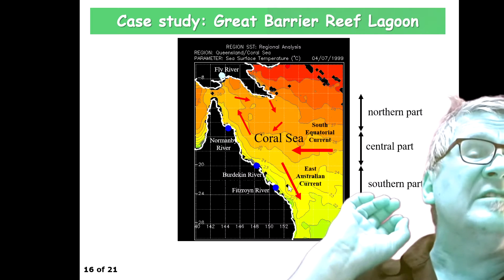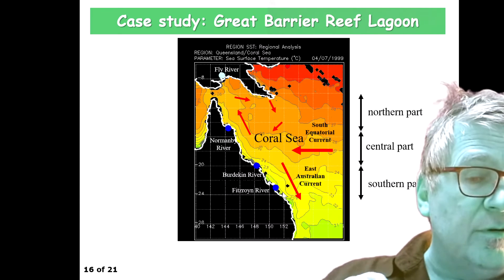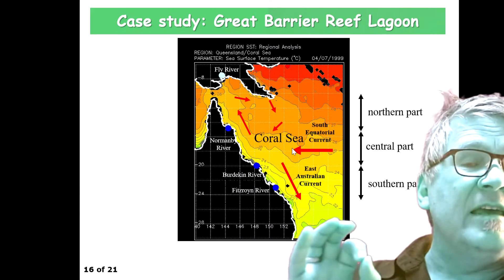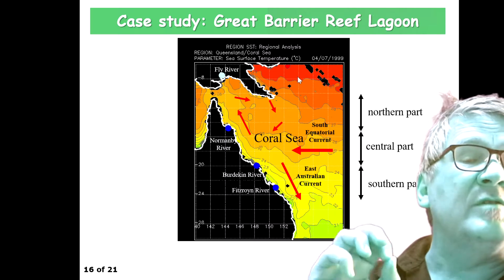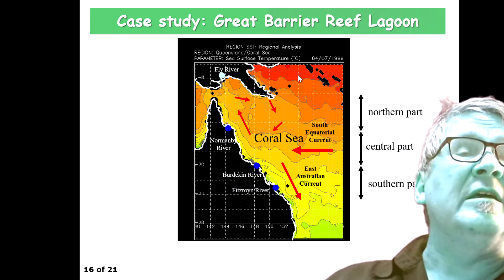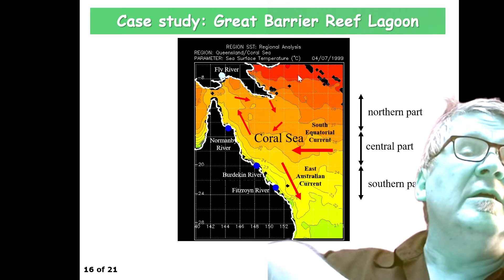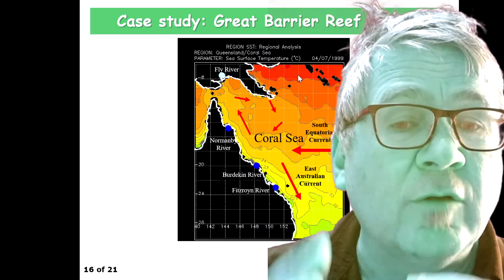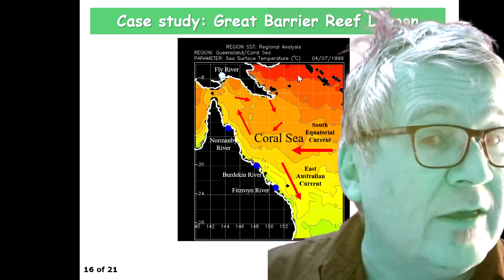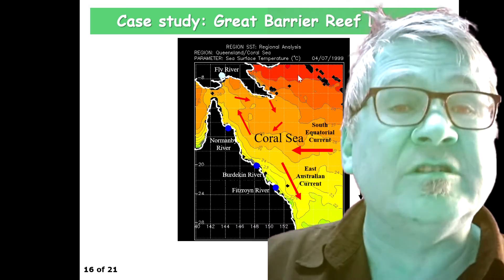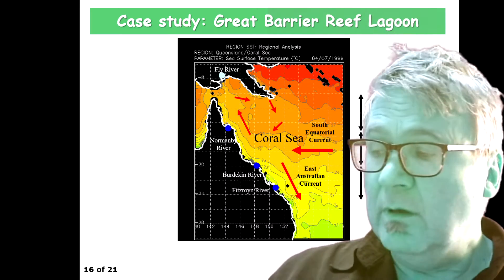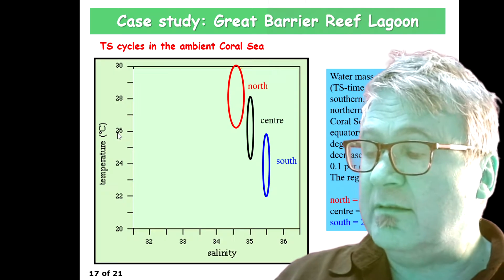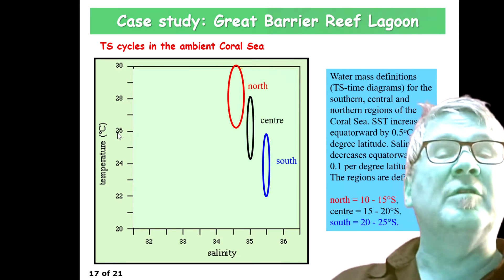Similarly, the salinity decreases as you go closer towards the equator, because you go into the intertropical convergence zone where you have increased rainfall. Let's see how these TS diagrams look like.